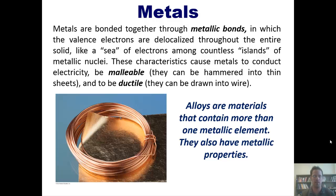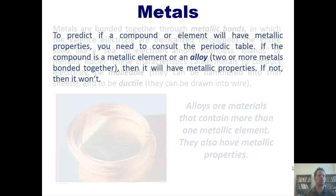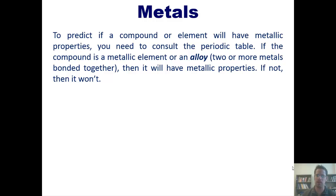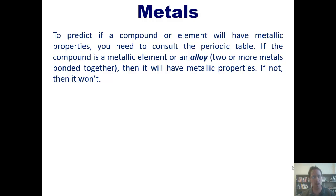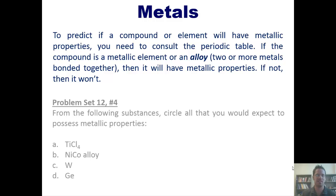Alloys also have metallic properties. So, to predict if a compound or element will have metallic properties, you need to consult the periodic table. If the compound is a metallic element or an alloy — which is two or more metals mixed together — then it will have metallic properties. If not, then it won't.